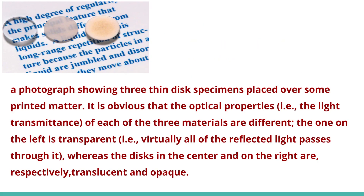This image shows aluminum oxide. A photograph shows three thin disc specimens placed over printed paper. The three discs demonstrate three different optical properties: on the left is reflectivity, and on the right is transmittance.